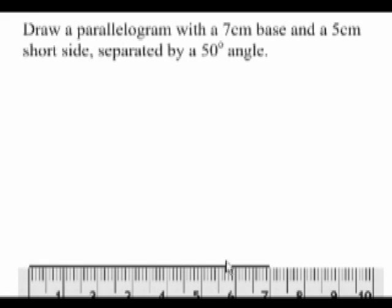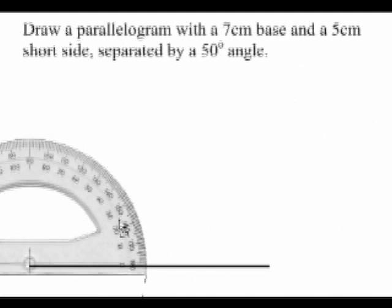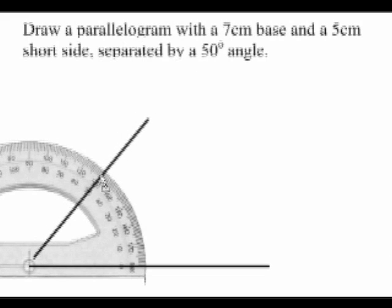The next thing I'm going to do is get a protractor and draw a line 5cm long at a 50 degree angle to the first line that I drew. There's my 5cm line at a 50 degree angle.